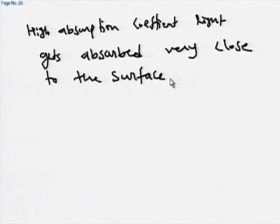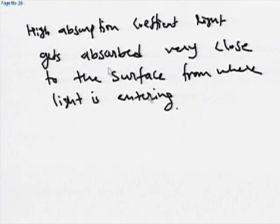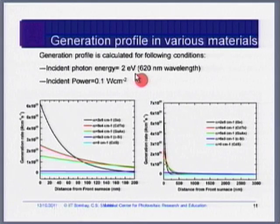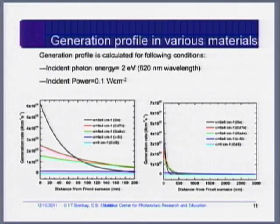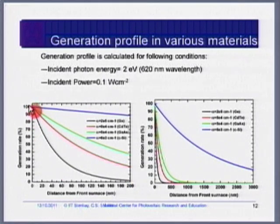High absorption coefficient light gets absorbed very close to the surface — from where light is entering. This information is useful when we design a solar cell. In another representation: high absorption coefficient light gets absorbed close to the surface, while low absorption coefficient light gets absorbed more or less uniformly, almost everywhere. Note this important point.